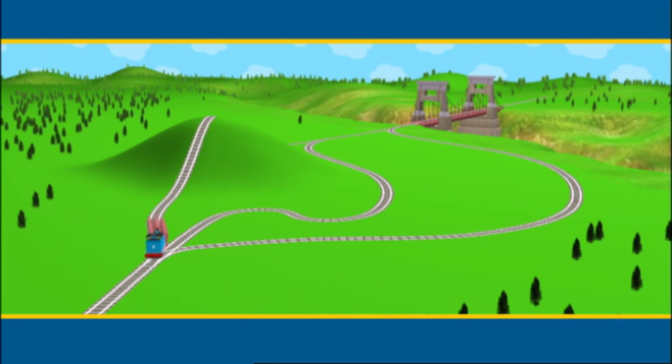Is there an easier way for Thomas to go? This way is quite short too, but there is a very sharp bend in the track. Do you think Thomas should go this way with his very long load?